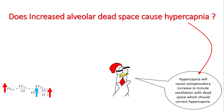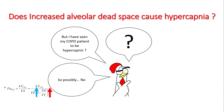However, hypercapnia will cause acidosis, and that would cause a compensatory increase in minute ventilation, which would increase your alveolar ventilation and compensate for increased dead space ventilation, dropping your PaCO2. However, you have seen your COPD patient to be hypercapnic.